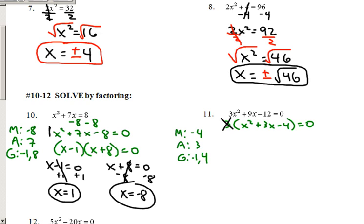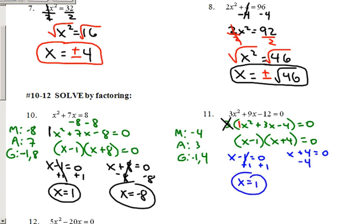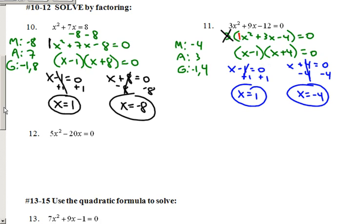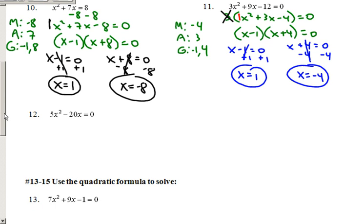Again, we factored it so that we got a 1x squared there. So we're going to go ahead and do the trick to x minus 1, x plus 4 equals 0. Set each one equal to 0. x minus 1 equals 0, x plus 4 equals 0. I'm going to add 1. So x equals 1 minus 4. So that's solving with some MAG, factoring in general.